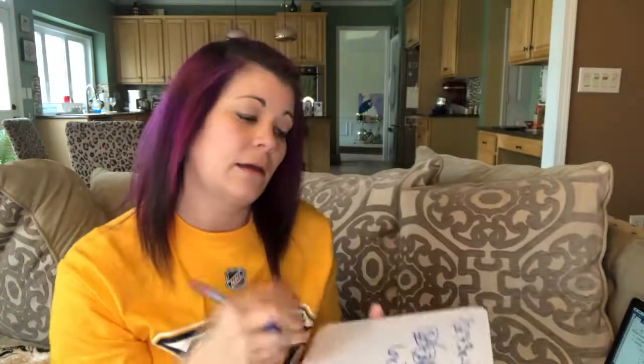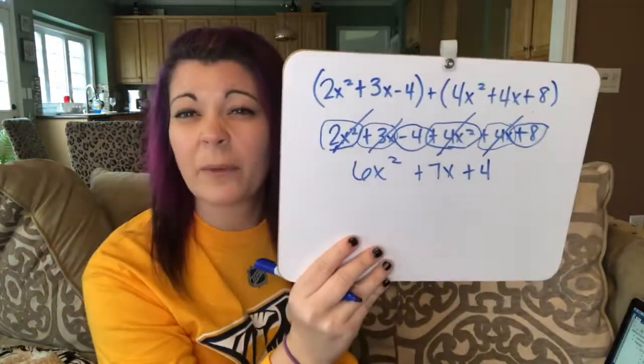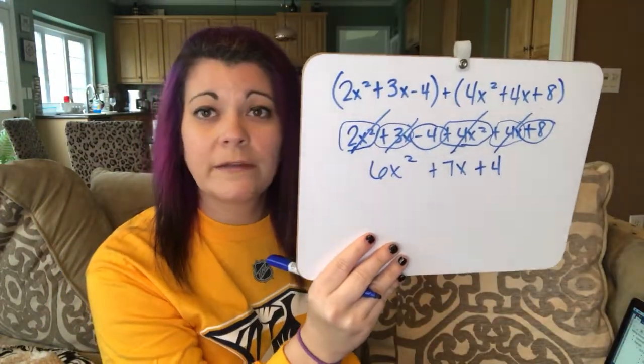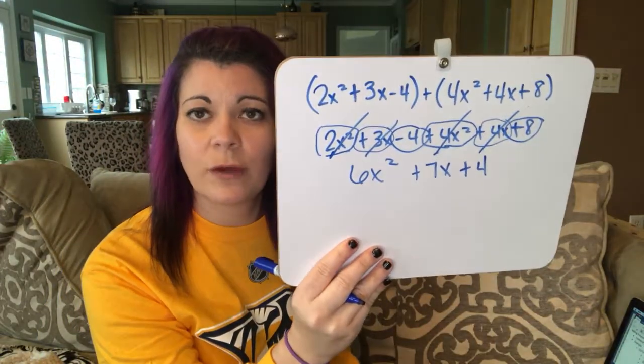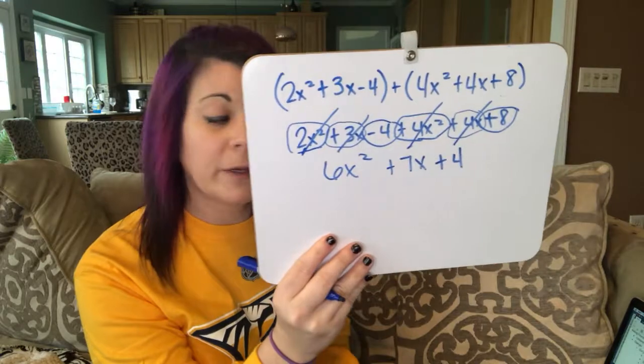We have simplified it. There's nothing else we can do because one term has x squared, one has x, and one has nothing, so there are no other like terms. Let's do another one.